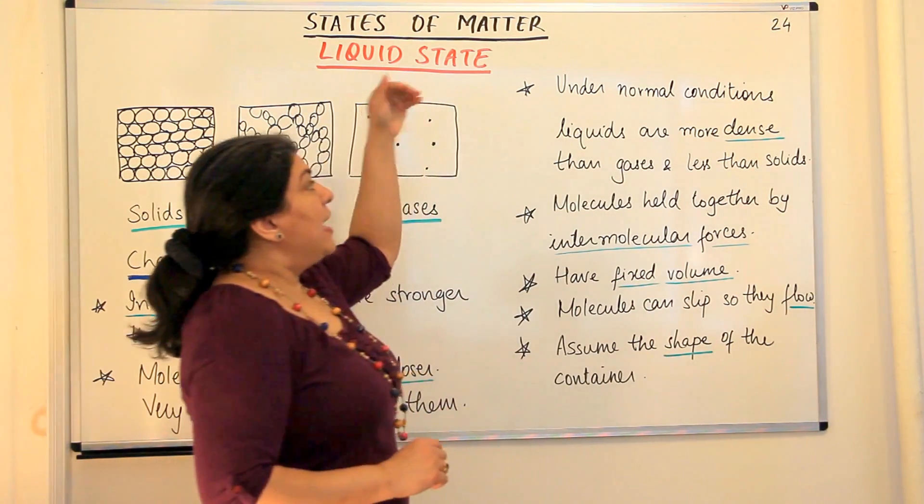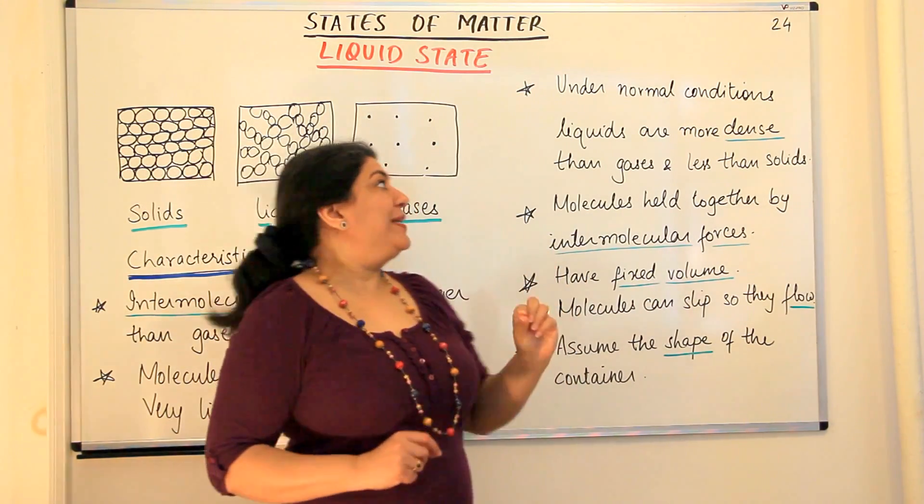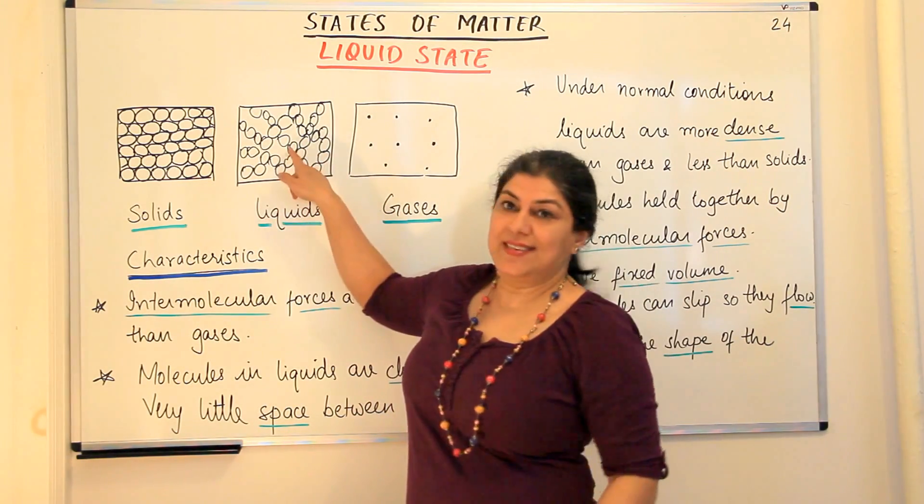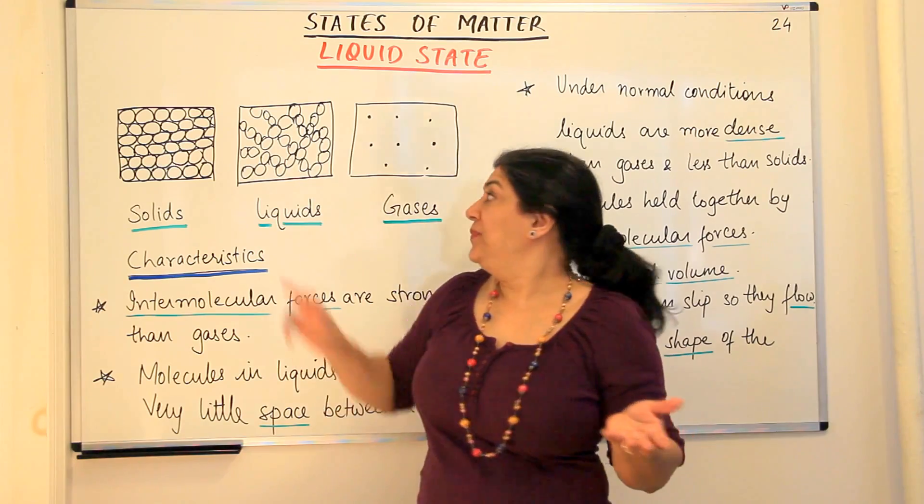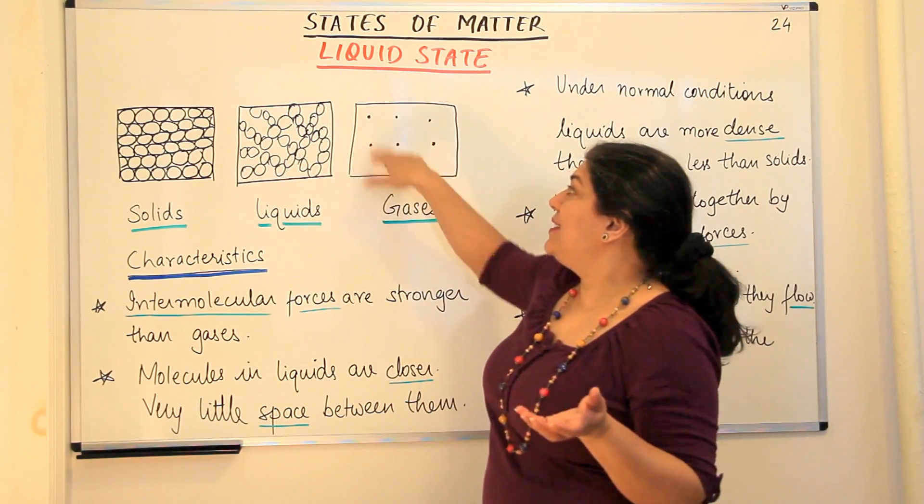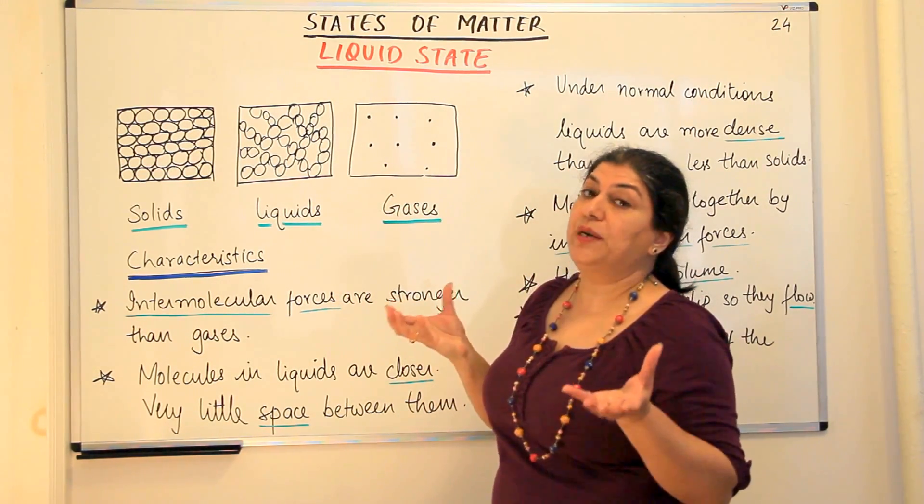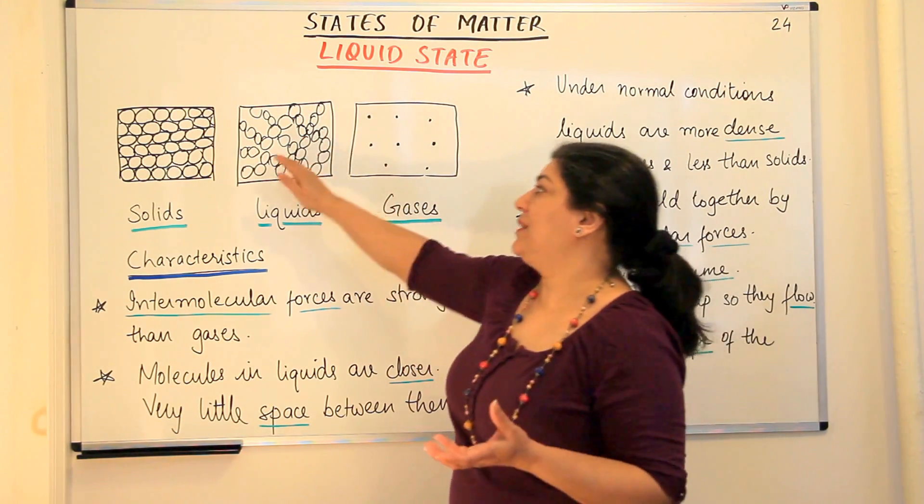The next is that under normal conditions liquids are more dense than gases because what is density? Density is mass per unit volume.